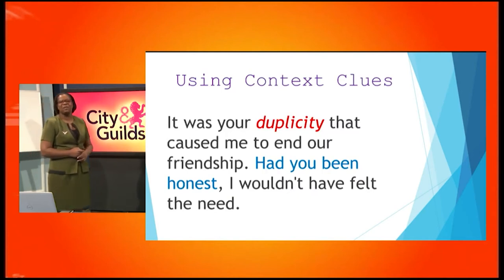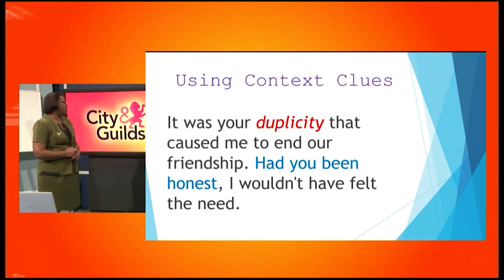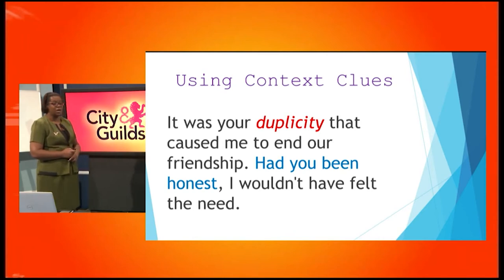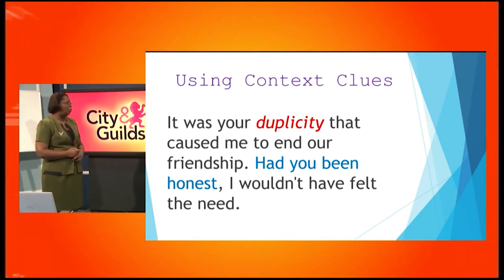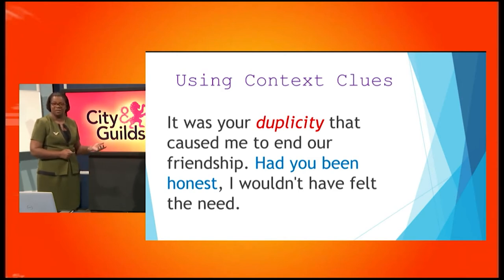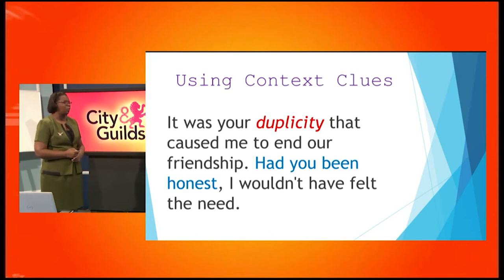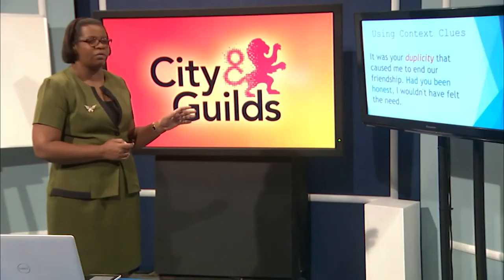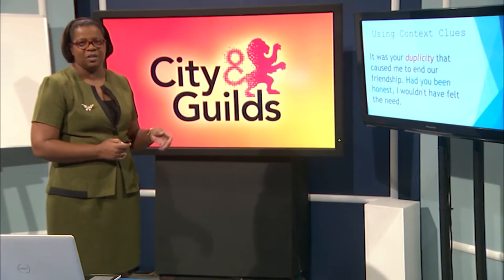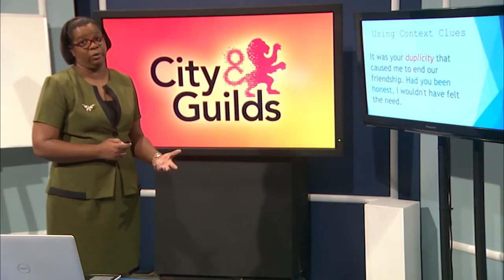So we're going to focus on the importance of using context clues. This says: it was your duplicity that caused me to end our friendship. Had you been honest, I wouldn't have felt the need. Now you've gotten some clues. I have given you some clues so you can figure out what duplicity means — obviously it's the total opposite of honesty.